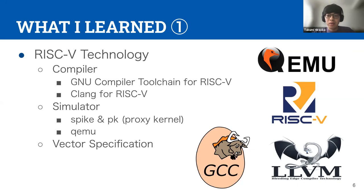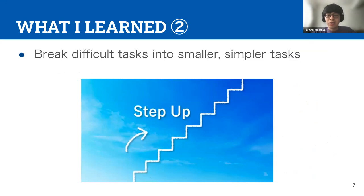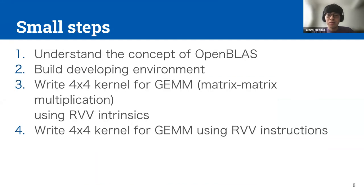I did not have an actual RISC-V machine, and RISC-V pieces are rarely available on the market, so performance measurement had to be done by simulation. I used simulator software such as Spike and QEMU and understood their usage. Since I dealt with RISC-V vector extension, I gained a deeper understanding of its specification. I also learned the importance of breaking difficult tasks into smaller, simpler tasks. In the beginning, I was very nervous about contributing to OpenBLAS because I did not know how to accomplish it. However, my mentor assigned us detailed steps to accomplish our goals, and I was able to move forward without feeling too much difficulty.